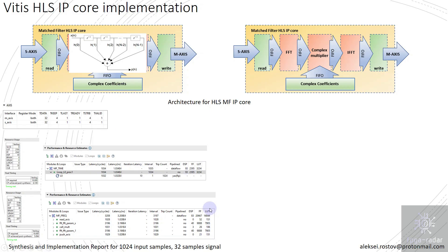For the FFT frequency domain implementation from Xilinx: for 1024 points, 40 DSP blocks are required, plus 3 DSP blocks for the complex multiplier, giving a total of 43 DSP blocks for 1024-point FFT. Overall, 83 DSP blocks are required for the frequency domain implementation.